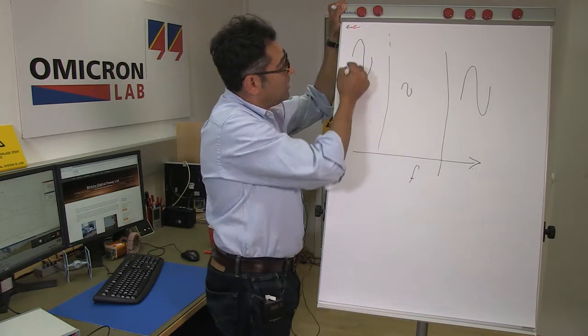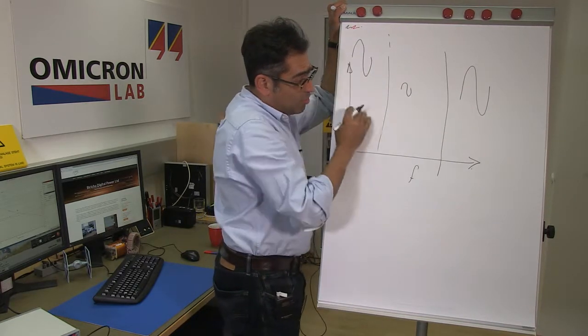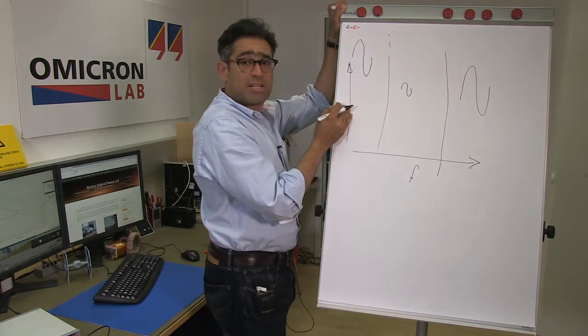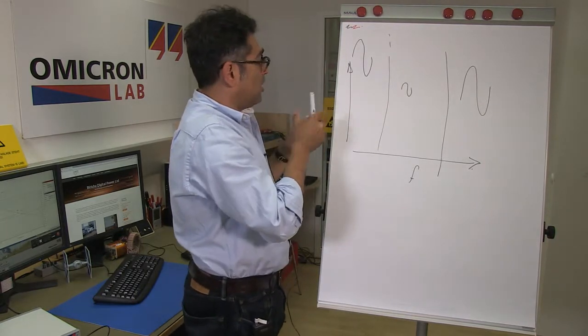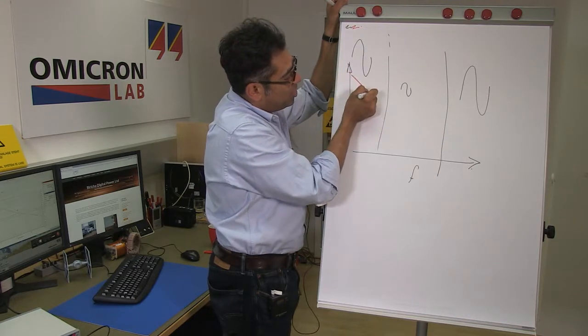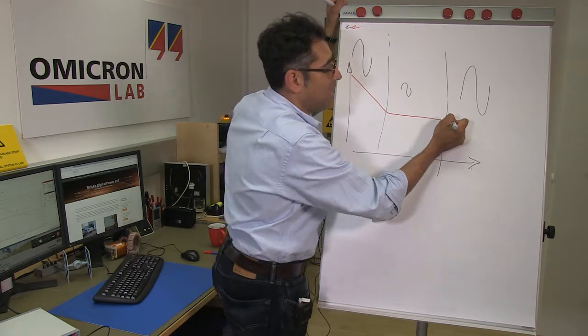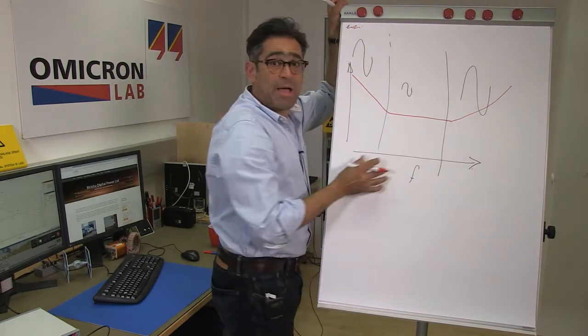So if I were to plot the height of the injected signal across the entire frequency range that I am plotting, the profile of it would look something like this. So I start with large amplitude, I would reduce it to a certain level, then I keep it pretty much constant, and then at high frequencies I take it back up again.